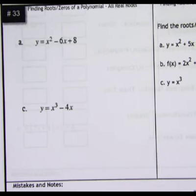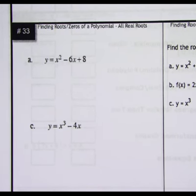Okay, taking a look at target 33. 33 is about finding the roots or the zeros of a polynomial when we're given all real root type graph or situations.